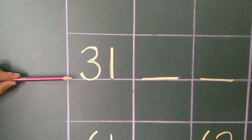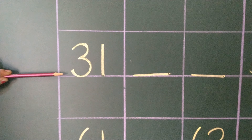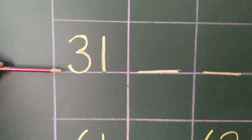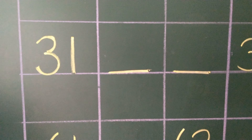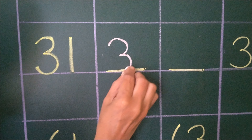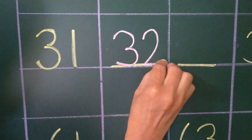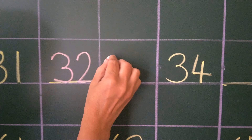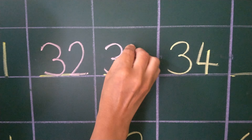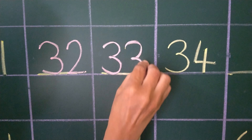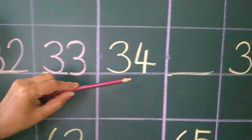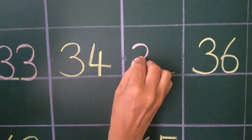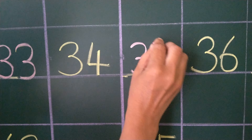Now next line. See which number is this? Number 31. 3, 1, 31. After 31, which number comes? 32. Then after 32, which number comes? 33. The next number is 34. After 34, which number comes? 35.